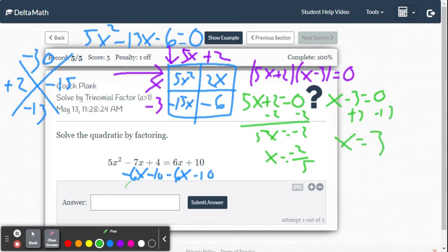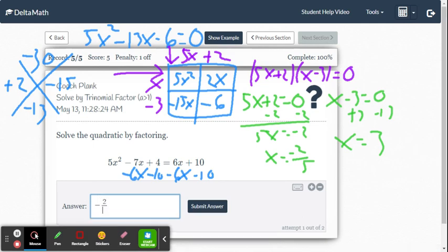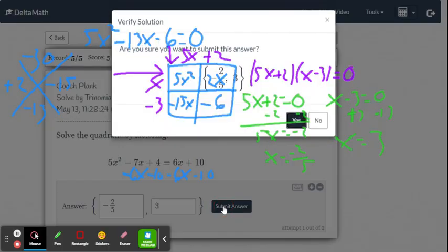So negative 2 fifths. I believe DeltaMath will let us do it either way as a decimal number. It would be negative 0.4. You get that. Use your calculator. Go negative 2 divided by 5. Or I'm just going to put it in as a fraction. So I'm going to go negative 2 over 5. Now I'm going to hit comma. It gives me my solution set automatically pops up. And then I put my other solution is 3. All right, we're going to submit and see if we get it right.